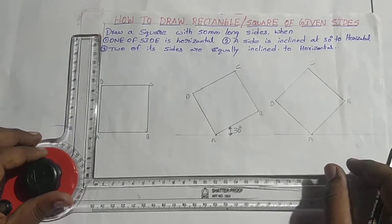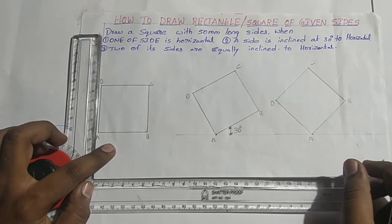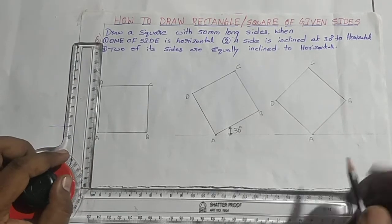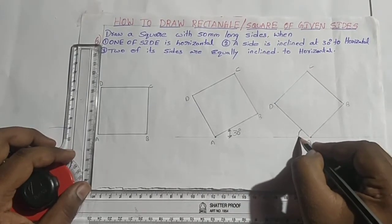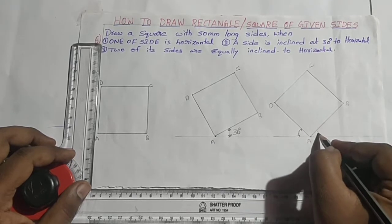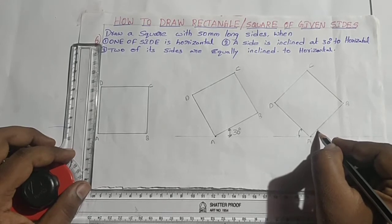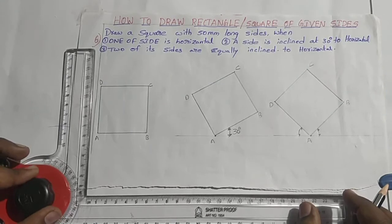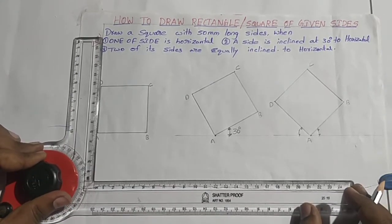The square is drawn in three given conditions: one of its sides is horizontal, next one of its sides makes an angle of 30 degrees to the horizontal, and next two of its sides are equally inclined to the horizontal line. This is also very important during drawings — after completion of the drawing we need to give the dimensions.